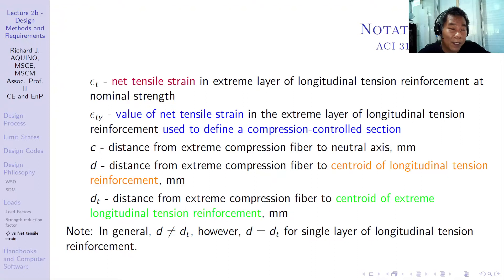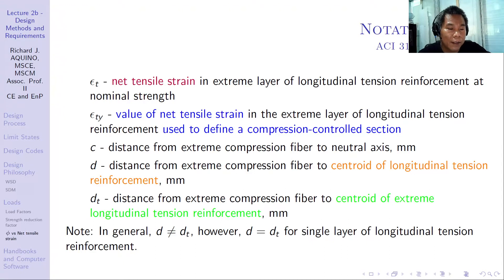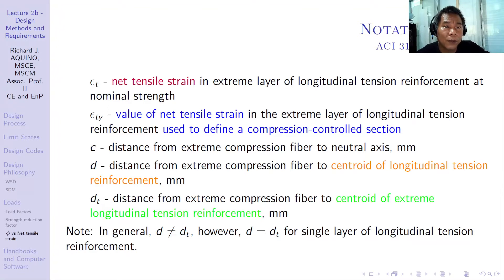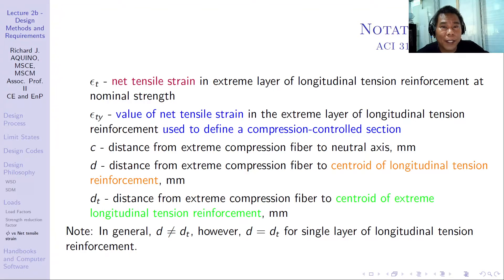dt is different from d — it is the distance from the extreme compression fiber to the centroid of the extreme longitudinal tension reinforcement. It is not always the case that d differs from dt; d equals dt when there is only one layer of reinforcement, but for two or more layers, dt is larger than d. It is very important to locate the tension and compression sides of your member using the moment diagram.